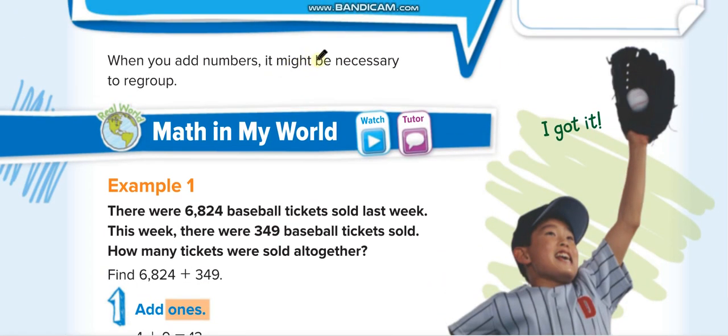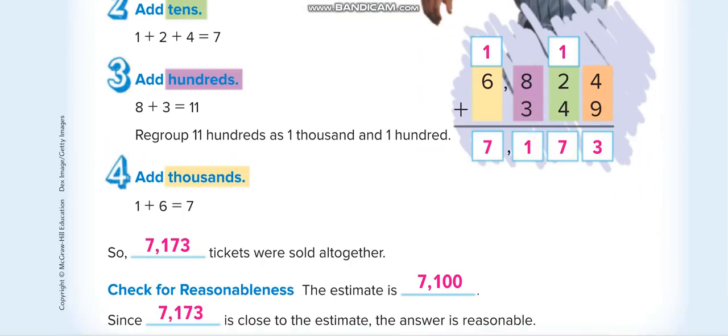2 plus 4 plus this 1 is 7. 8 and 3 is 11. 1 here and 1 up, and 1 and 6 is 7. So 7,173. If you round it, the estimate is 7,100. This is our answer.